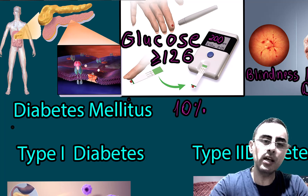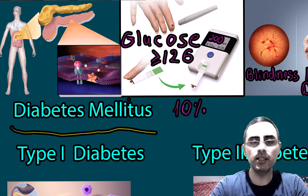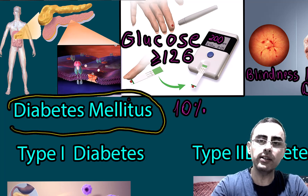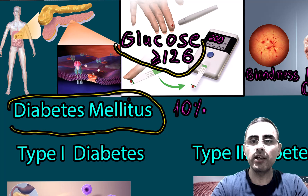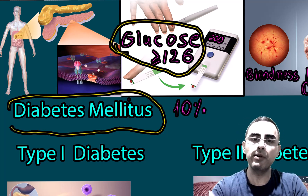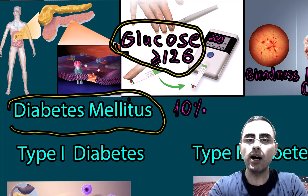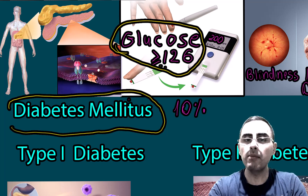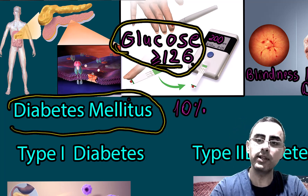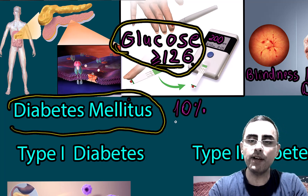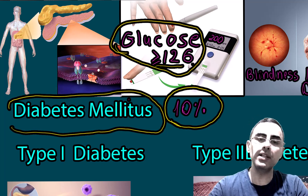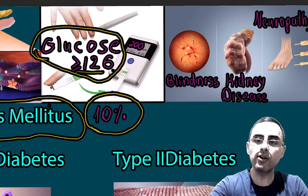When we say diabetes, we usually mean diabetes mellitus, which means high blood glucose level. The most important characteristic of diabetes is high blood glucose level, which is usually more than 126 milligrams per deciliter during fasting. Diabetes affects more than 10 percent of the world population, which means it is an extremely common disease.